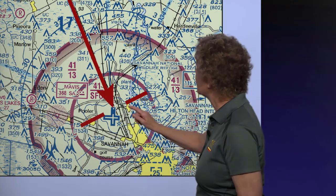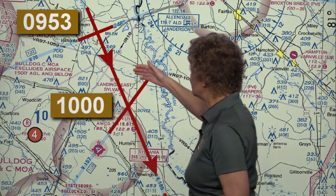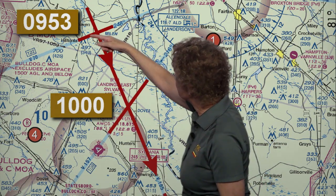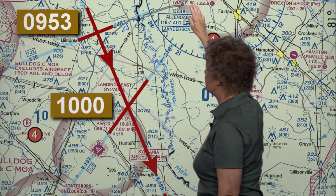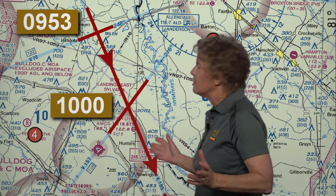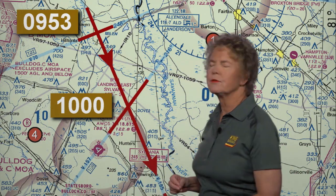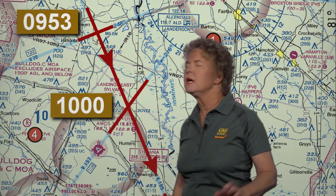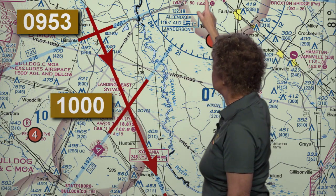We want to know our estimated time of arrival at the VOR, given that we cross a couple of checkpoints. Our two checkpoints are up towards the top of the chart. Our first checkpoint, as we're flying southeast bound on Victor 185, is the 248 radial off of the Allendale VOR. It's an airway, so it's already drawn on the chart for us — we don't even have to draw the line. We cross that first checkpoint at 9:53.